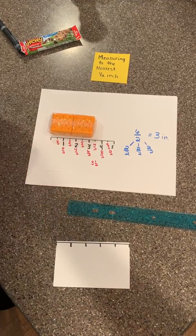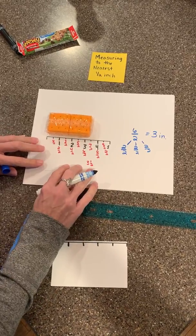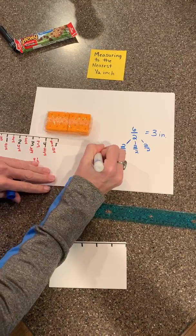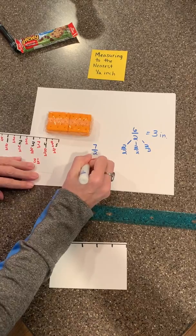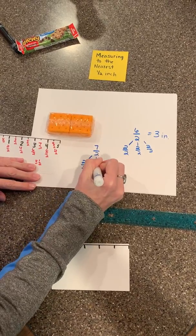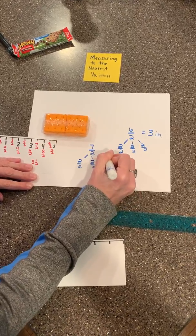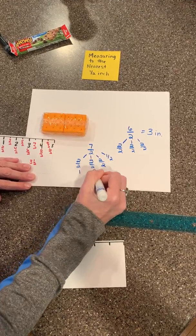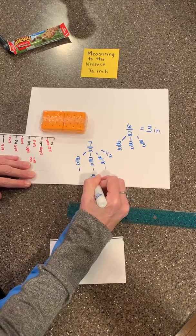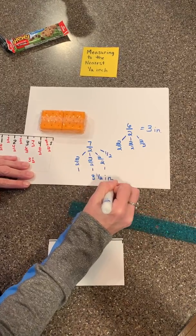And the way I know that is because if I take seven halves, and once again, I think of that as two halves, another set of two halves, third set of two halves, and then I know that I have one half left over. These are my wholes, so that would be three and one half inches.